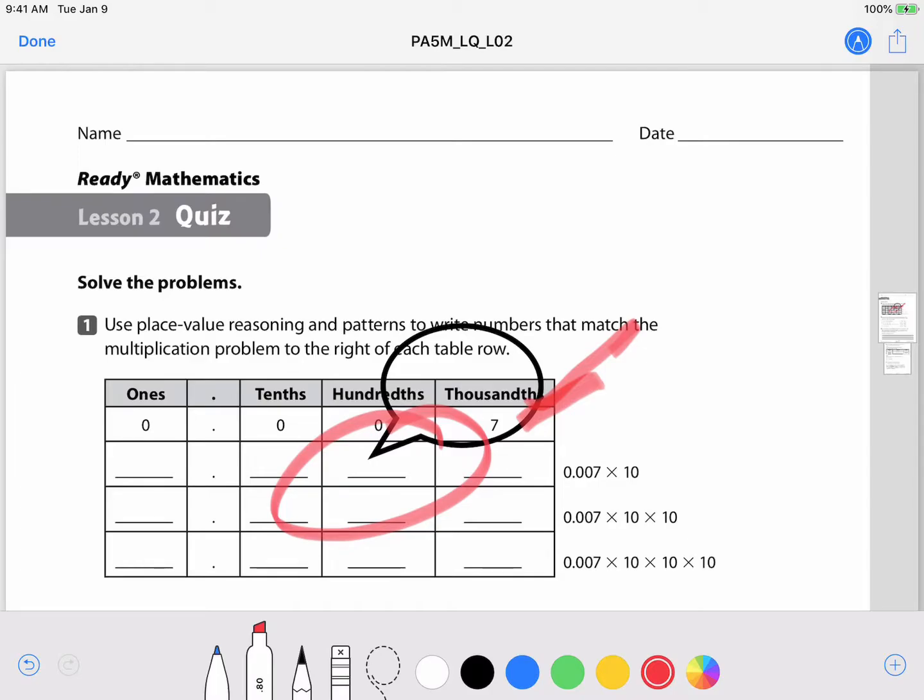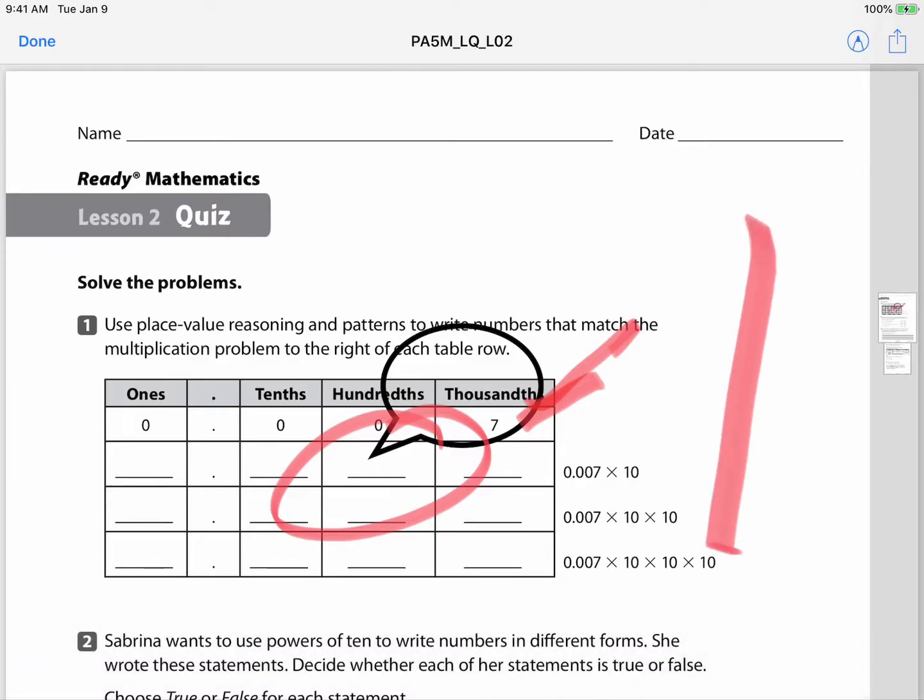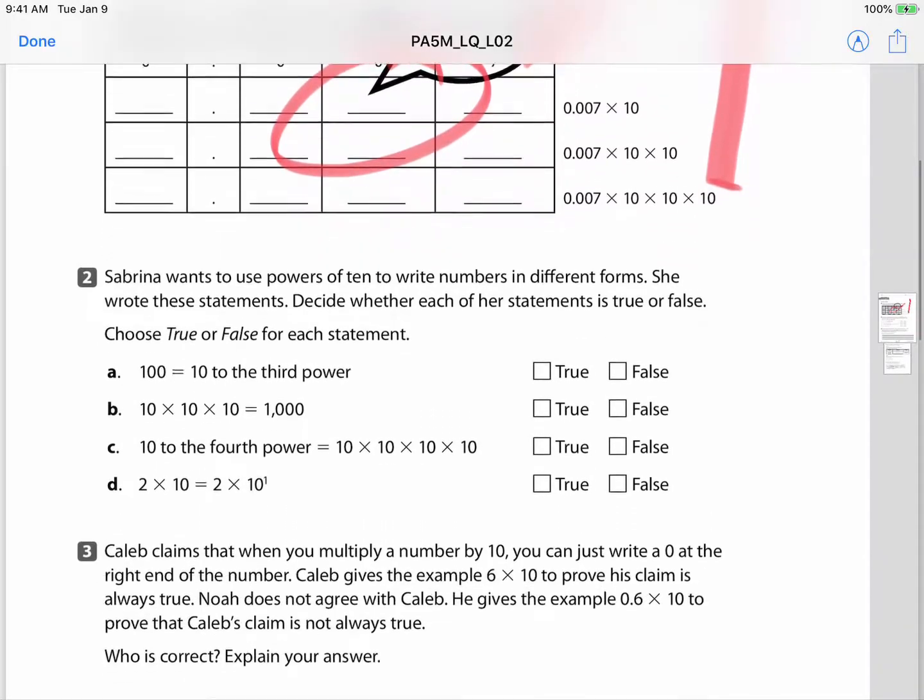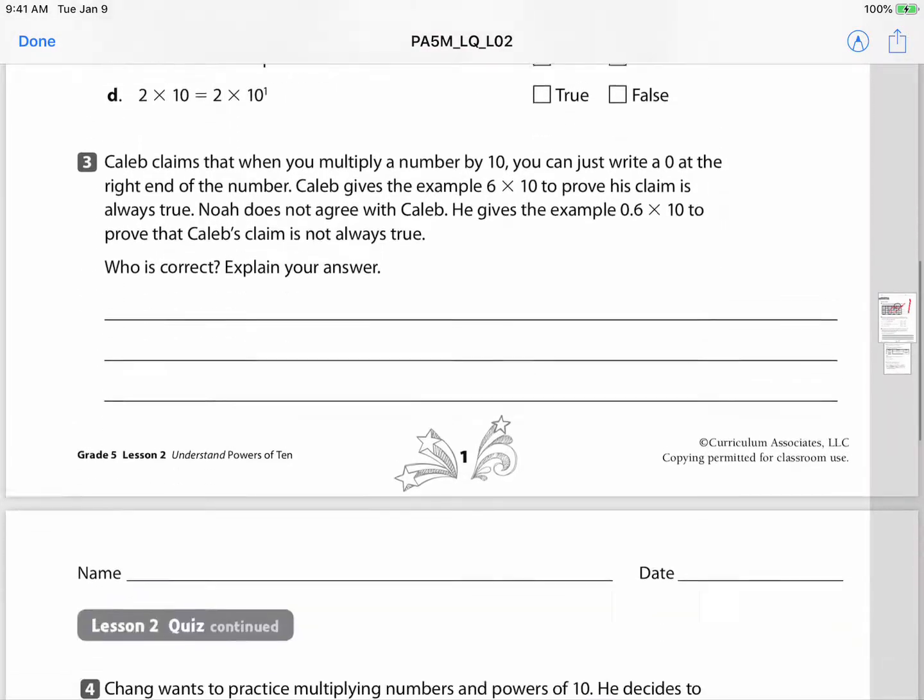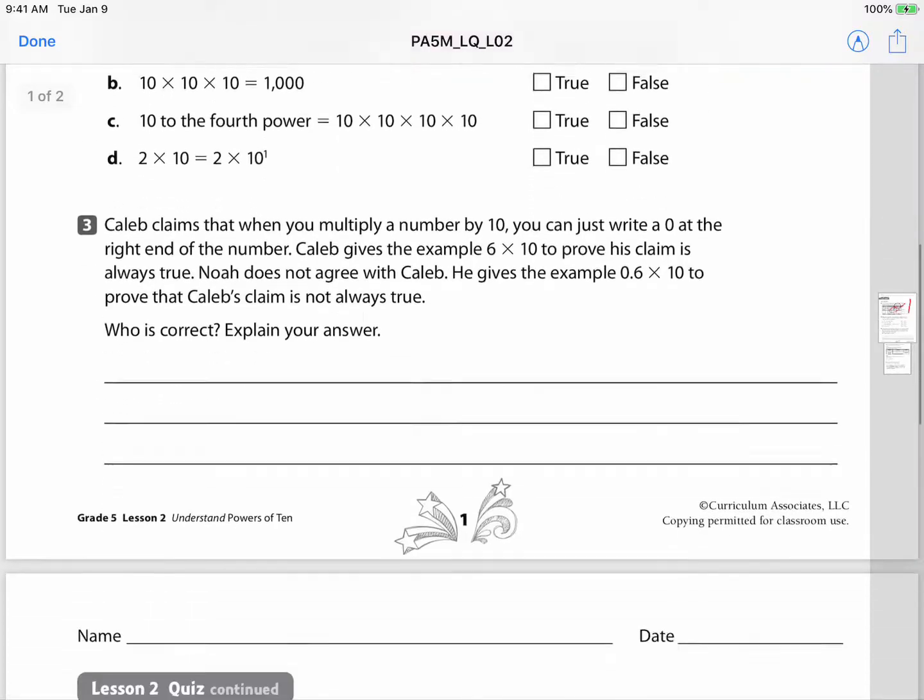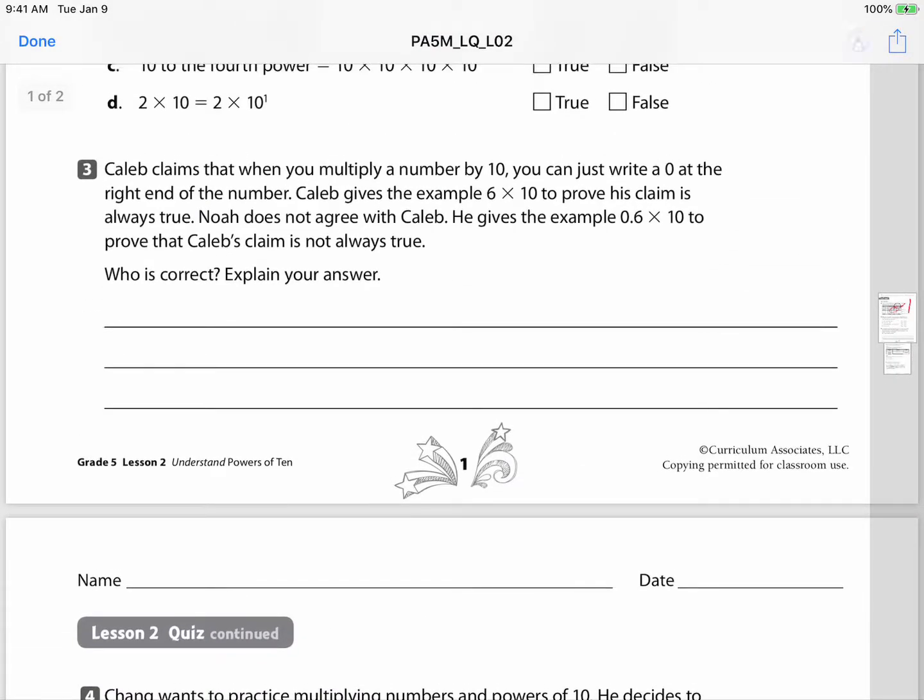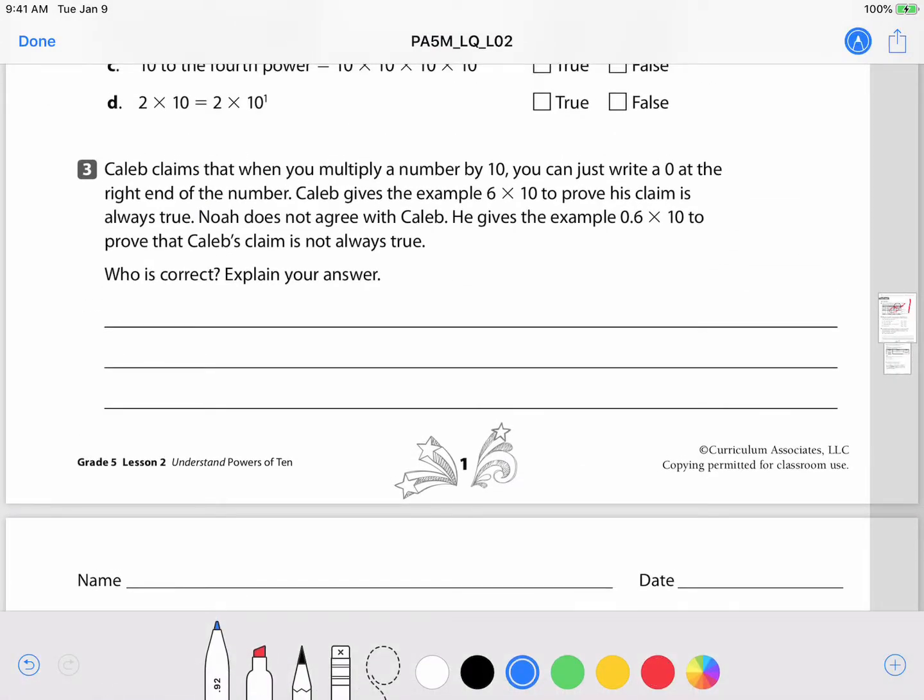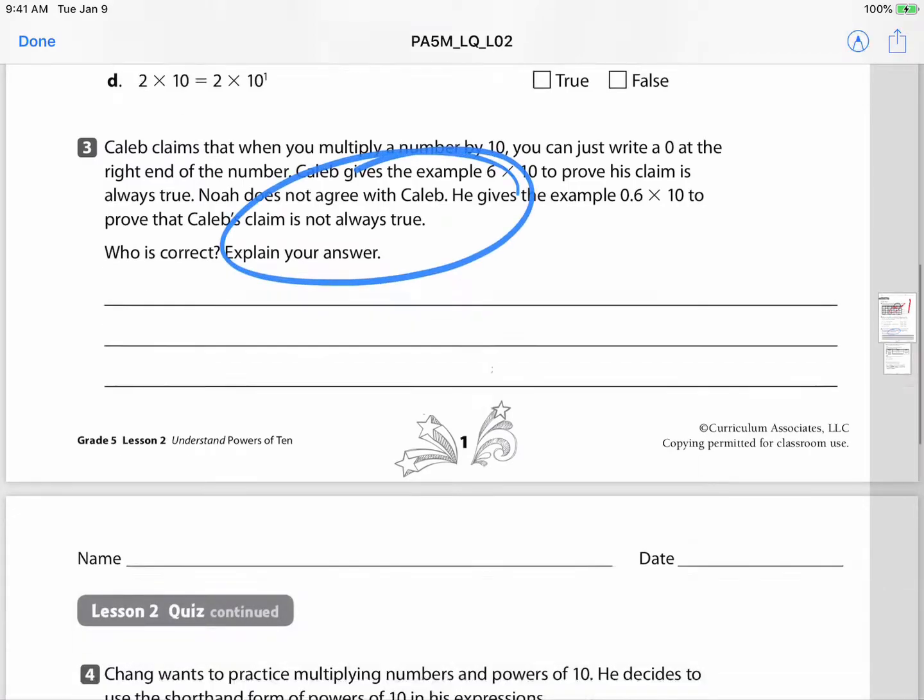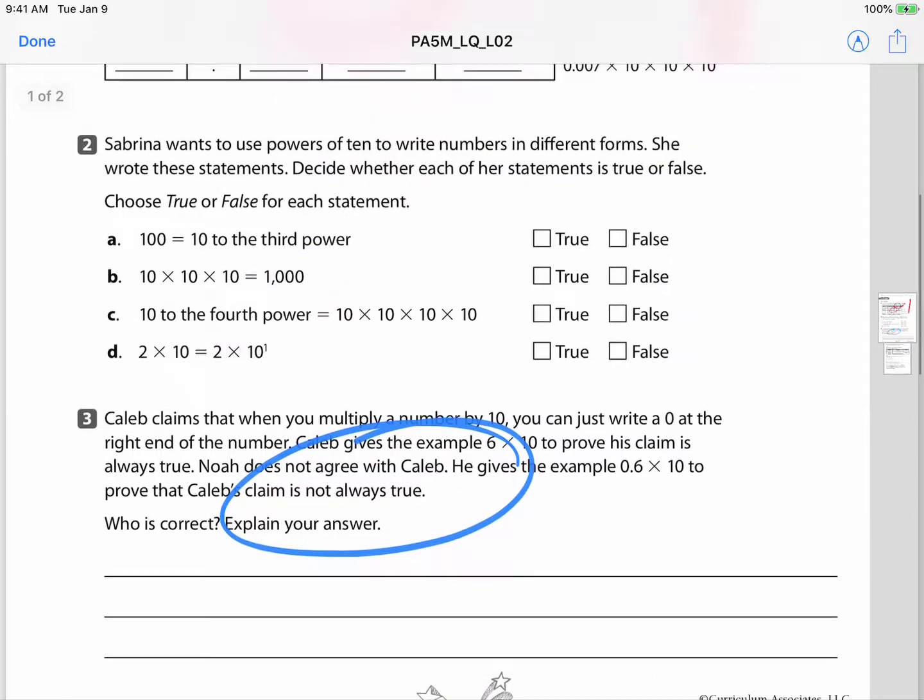And if I tap the markup again you can see that now I can move it around and it stays with this. So if I tap markup again I can go in and I can annotate over here, click on markup, and now it stays right there.